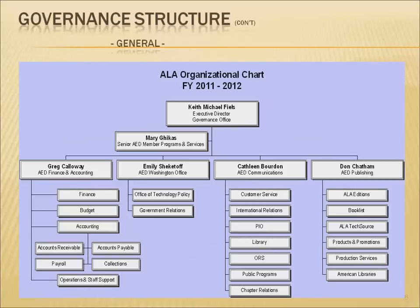We have major investment in buildings — the headquarters building in Chicago, the Washington office, and a new building in Connecticut which supports the work of Choice — as well as all our furniture and equipment. Each year we also establish a capital budget that takes care of the maintenance and purchasing of equipment and technology we need to do our work. Several years ago, the ALA board recognized the increasing importance of refreshing technology, so we established a special technology reserve fund, which combined with the capital budget has given us the ability to invest in a more strategic way in the technology of the organization.